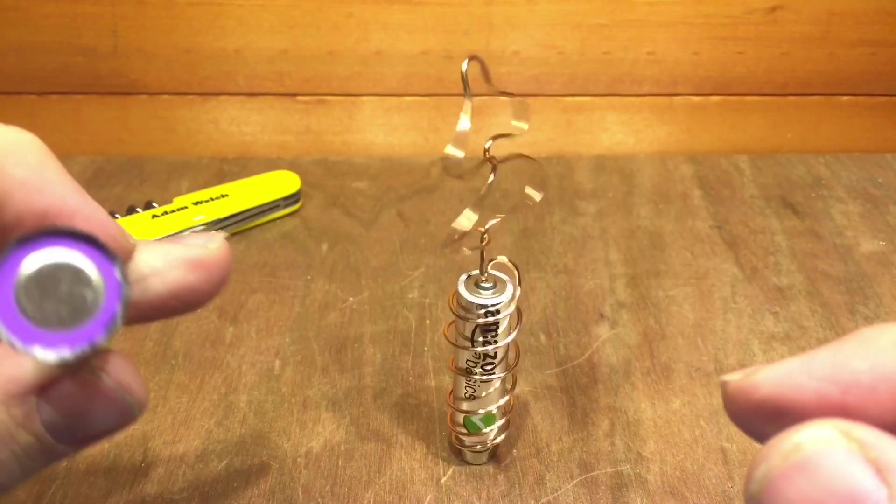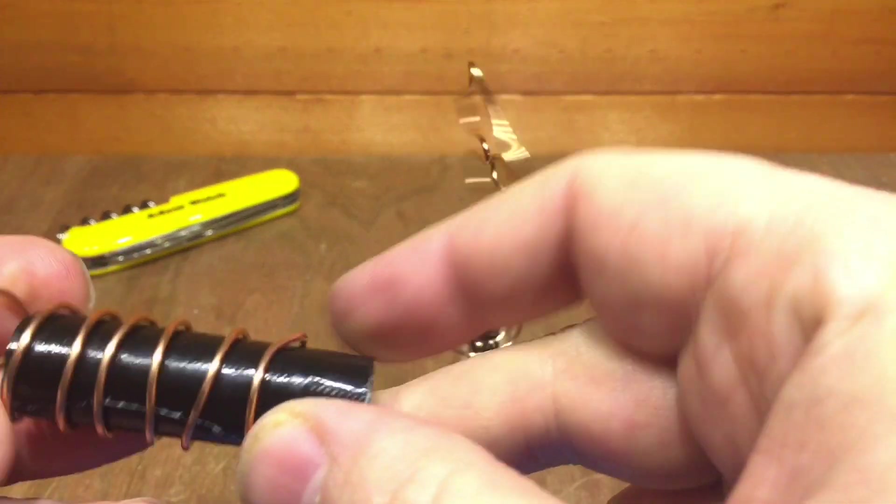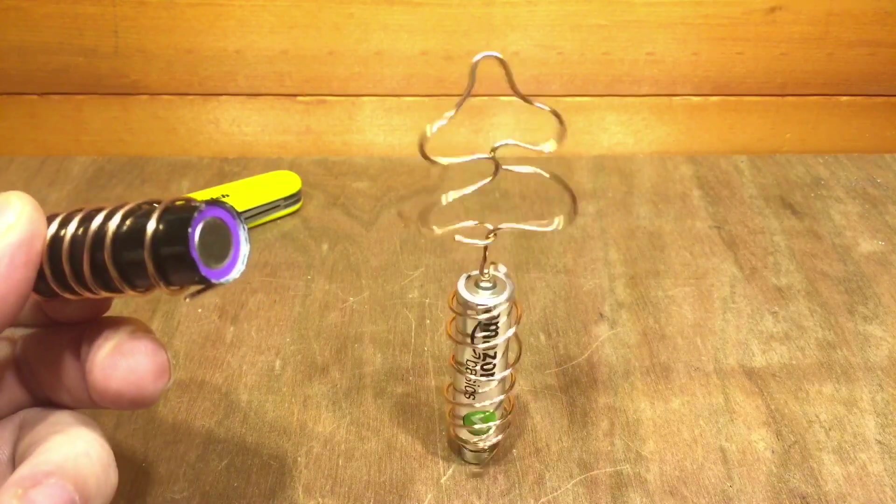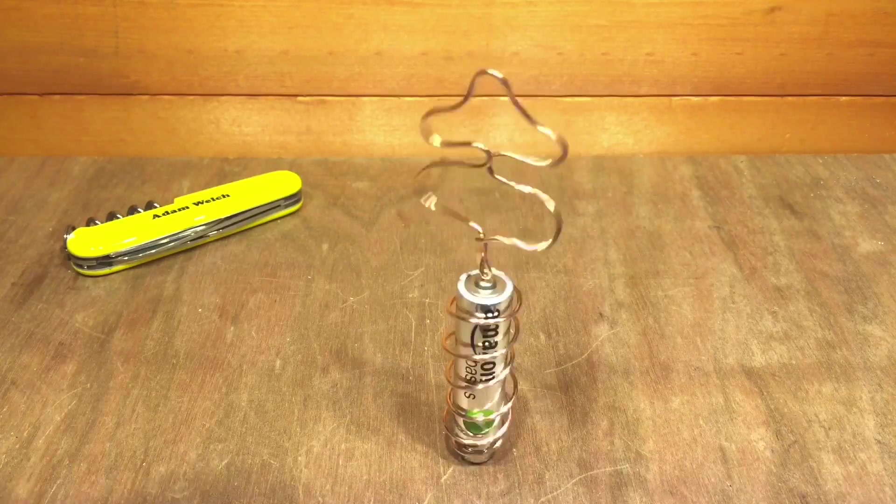wrap your wire around - a double A battery or slightly larger than a double A battery - and therefore that gives you just about the right size to create this homopolar motor. And the neodymium magnets I used, most of these ones